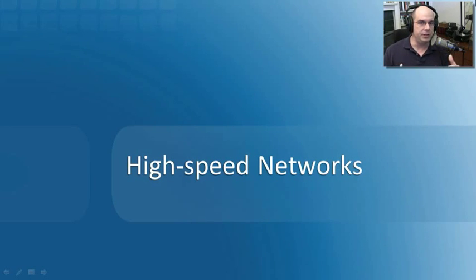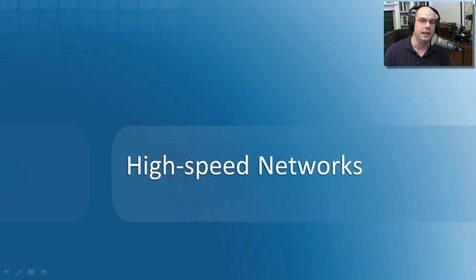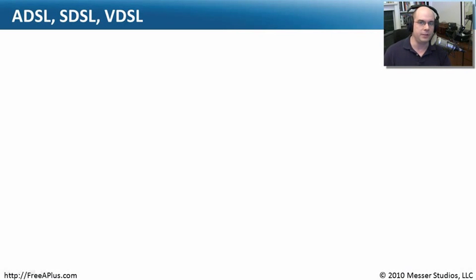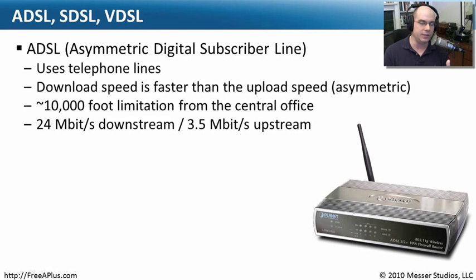Let's start our conversation with what we consider to be high-speed networks. Sometimes you see that written as broadband, but that doesn't necessarily mean that the communication method going across that network is a broadband type of communication. These days, it's almost become a catchphrase for a high-speed network. The first kind of high-speed network is DSL, which stands for Digital Subscriber Line, and there are different flavors of DSL.